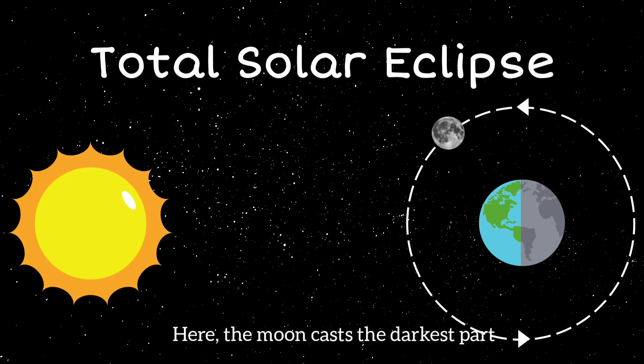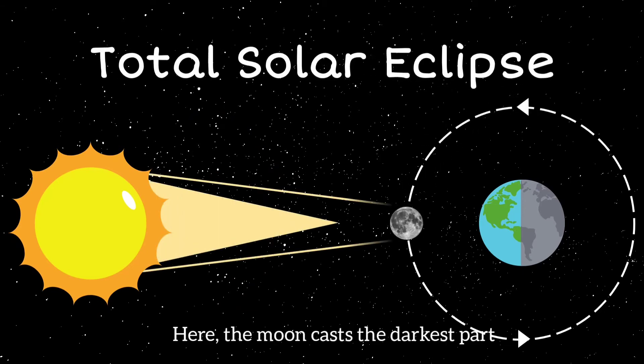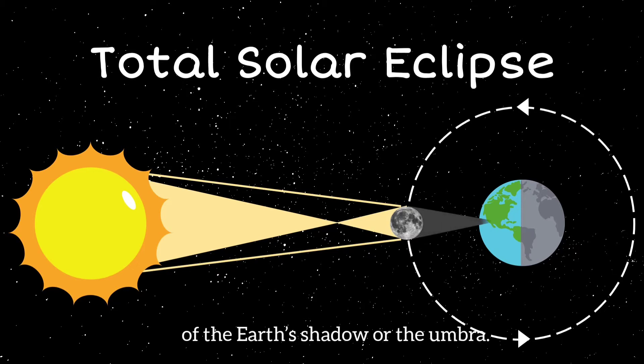Here, the moon casts the darkest part of the Earth's shadow or the umbra.